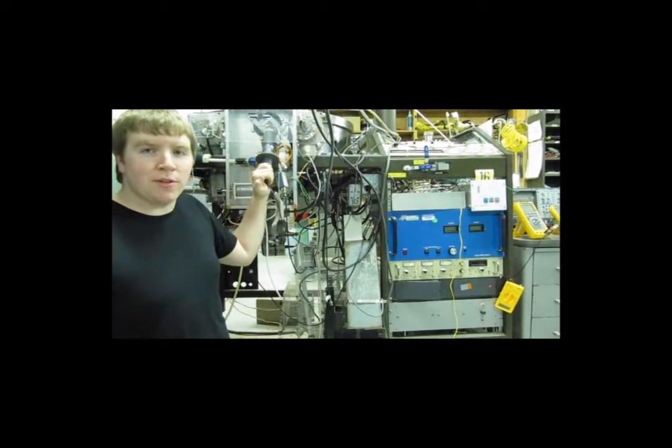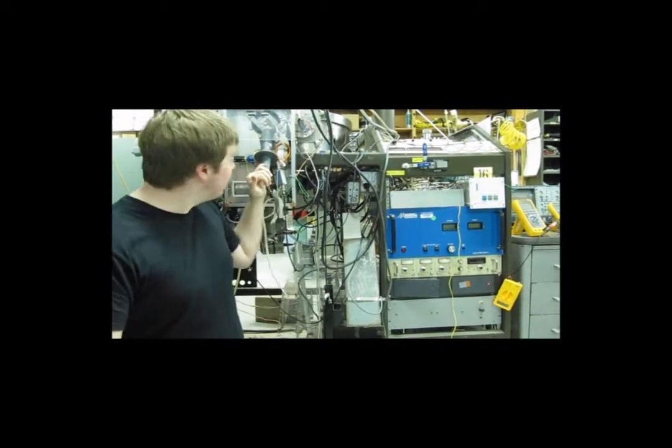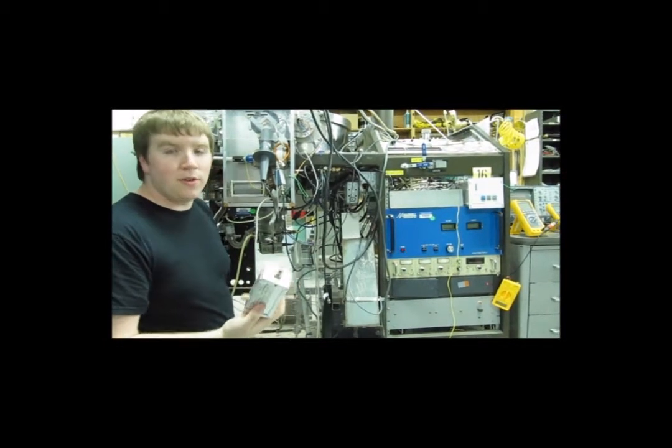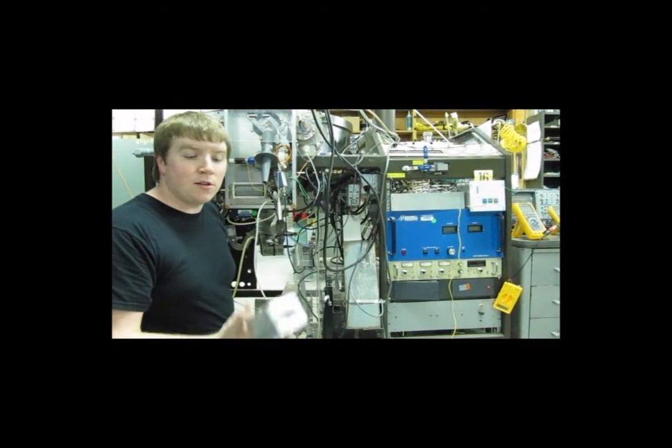Here is the high voltage probe, which we use to measure the voltage as the experiment runs. And over here, we have the shunt resistor. The shunt resistor measures the current through the experiment. And that concludes the electrical system.